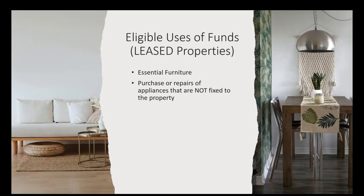For leased properties, the eligible uses are more limited: essential furniture — again, single beds only, no bunk beds — and purchase or repair of appliances that are not fixed to the property. For example, a stove is acceptable, but a water heater, furnace, windows, or roof repairs are fixed to the property and therefore ineligible. We cannot provide funding for anything permanently fixed to the property if you lease it.